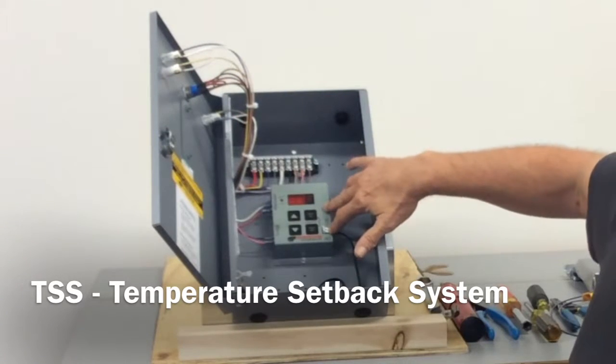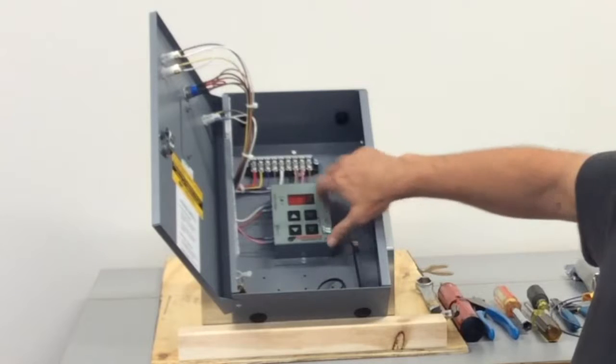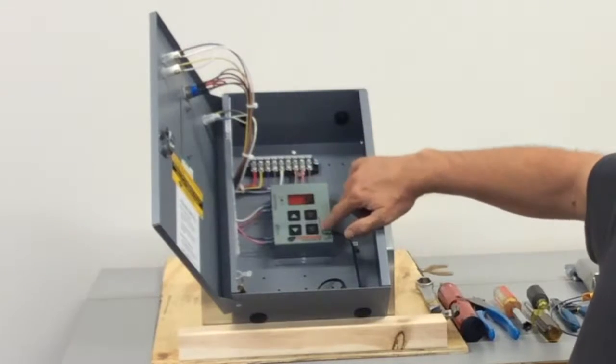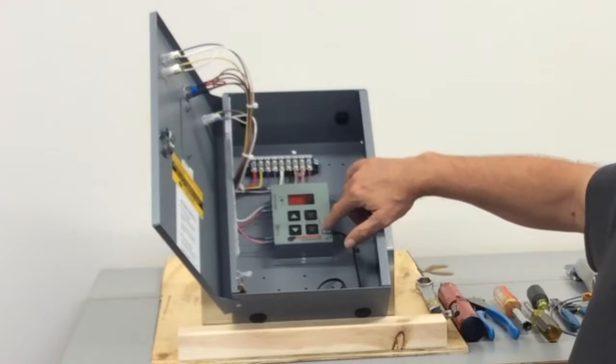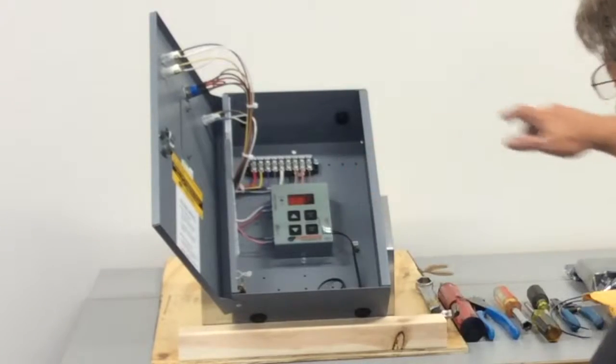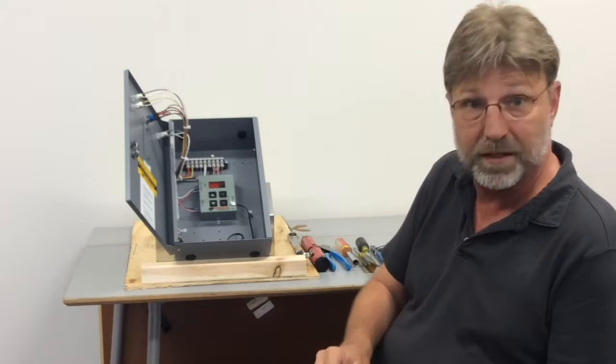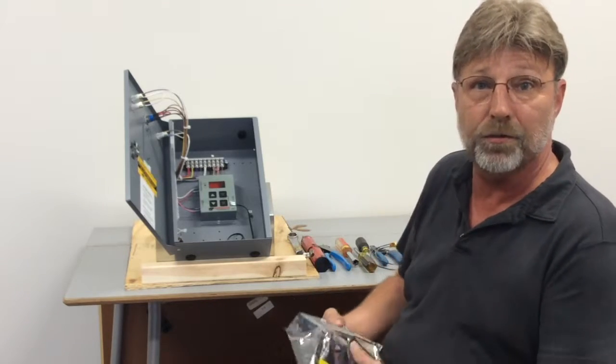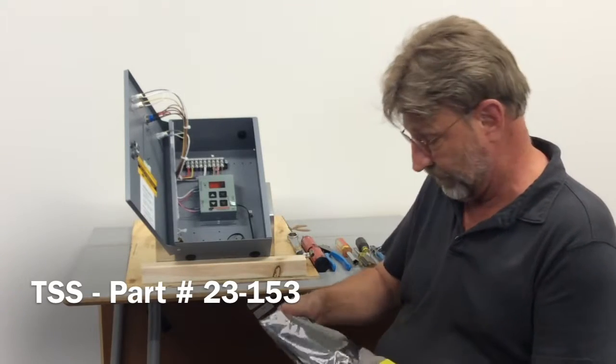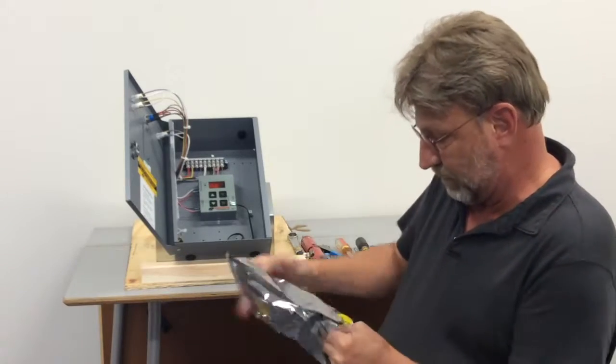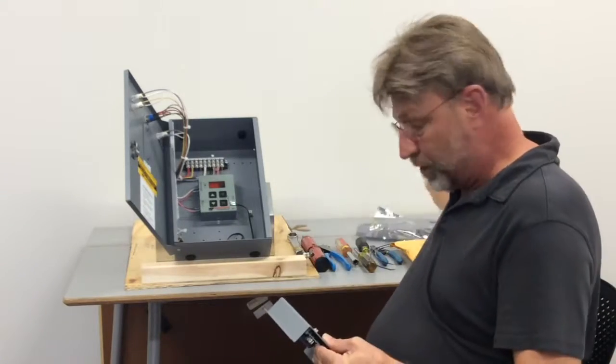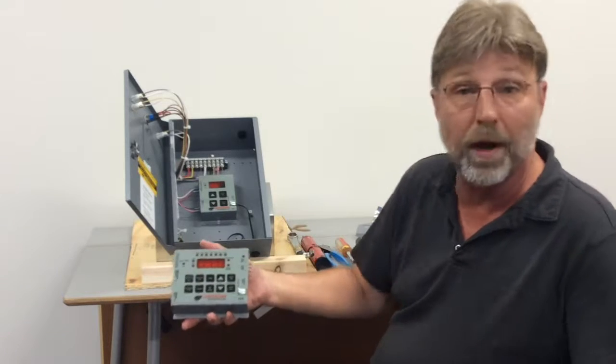This is your standard RCSS controller module. You can see we have four buttons here, just simple heat on, heat off, and that's pretty much it. What we're going to do today is we're going to replace it with TSS here, part number 23-153.